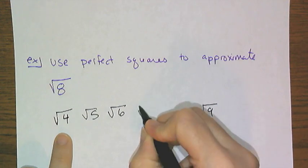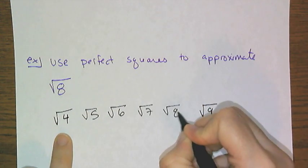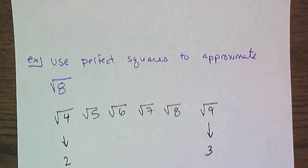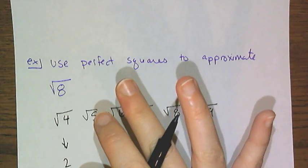In between the square root of 4 and the square root of 9 are the square roots of 5, the square root of 6, the square root of 7, and the square root of 8. And if I want a decimal approximation, not the exact value, okay?